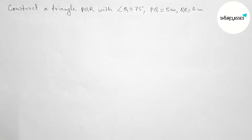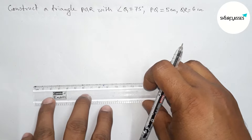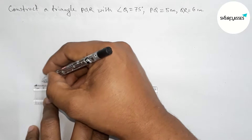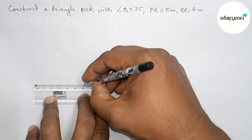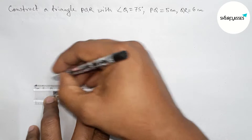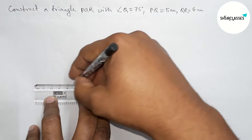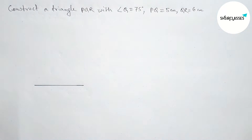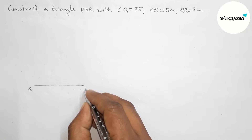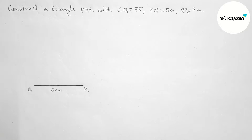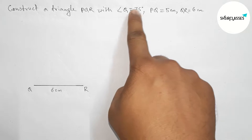First of all, let us draw the QR side, that is 6 centimeters. So first, drawing a line segment of length 6 centimeters. Now taking point Q here and point R here, so QR is 6 centimeters. Next, we will draw a 75 degree angle at point Q with the help of a compass.